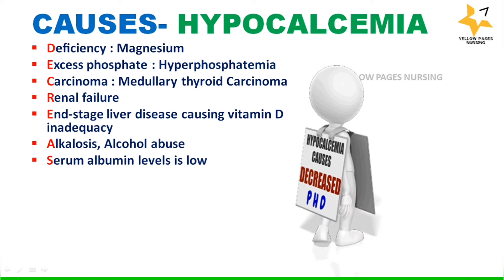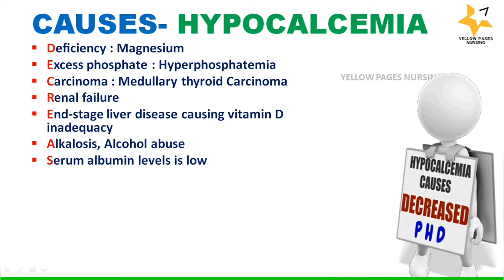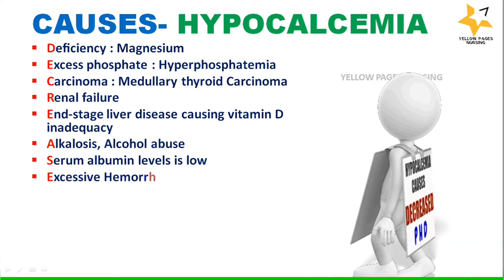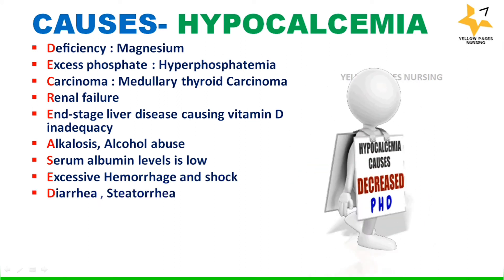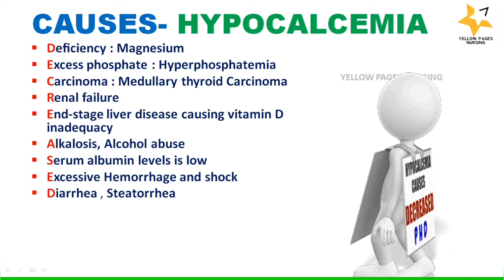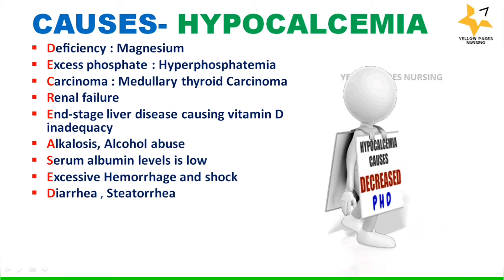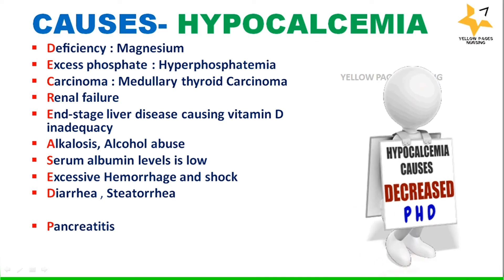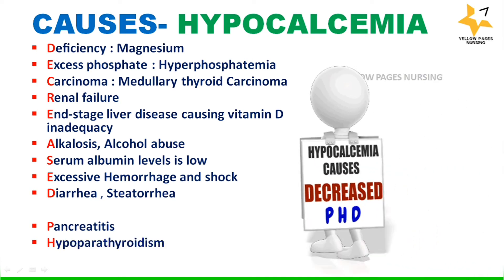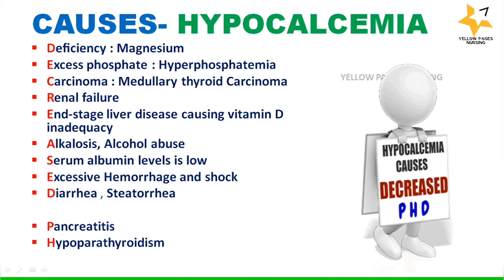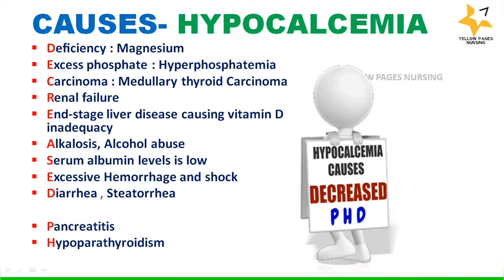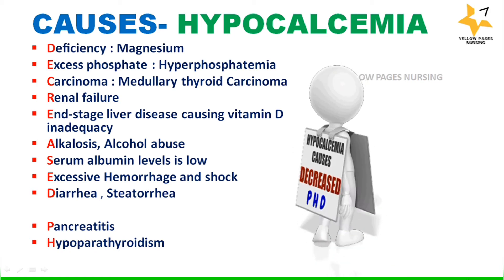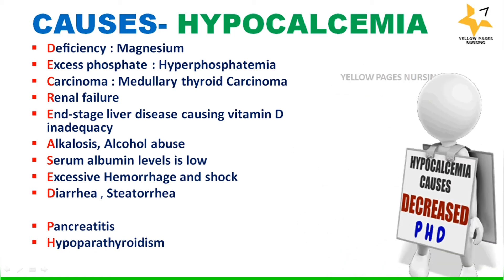Ionized calcium may reduce without changes in total calcium. Other causes include very low serum albumin levels, excessive hemorrhage and shock, diarrhea, and steatorrhea — the excretion of abnormal quantities of fat due to reduced absorption of fat by the intestines. Pancreatitis and hypoparathyroidism are also causes. Hypoparathyroidism is a state of decreased secretion or decreased activity of parathyroid hormone, leading to decreased calcium levels and increased phosphorus levels.